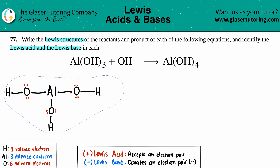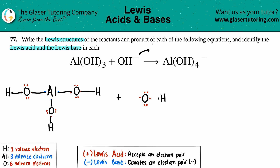Now I have the second reactant coming in: just another OH⁻. So I have oxygen and then a hydrogen. Oxygen has six valence electrons and hydrogen has one. This negative charge means that throughout the whole compound, you gained one electron. Always put it towards the more electronegative element — that would be the oxygen. I'll bind them with one single bond and we have the octet. The oxygen is the one that has the negative charge.